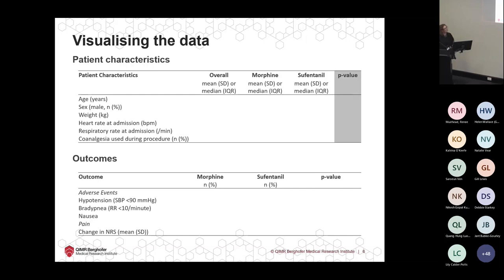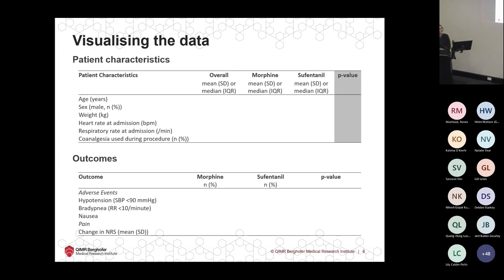For the outcome variables, most are frequency and percentage, and then we have change in NRS as a continuous variable — maybe we'll report it as mean or standard deviation, we don't know yet. For hypertension, it's a binary categorical variable with two categories, so I only need to report one — if 20% had hypertension, I know that 80% didn't. We just try to keep our tables nice and simple.